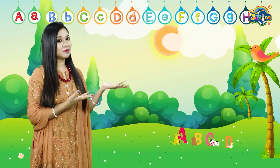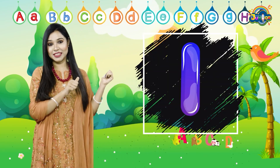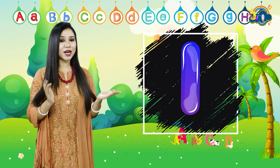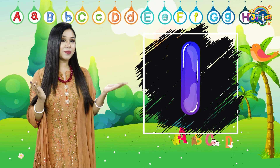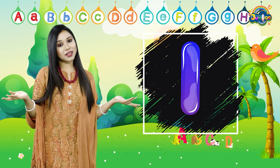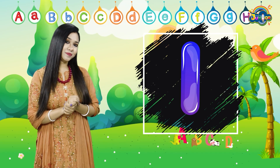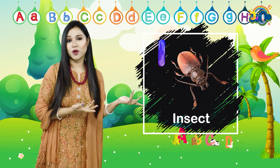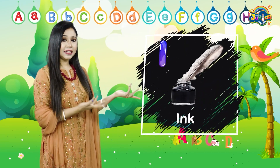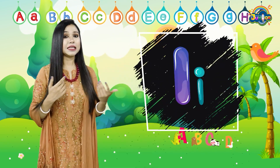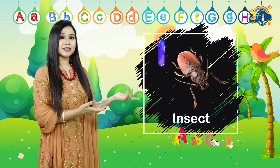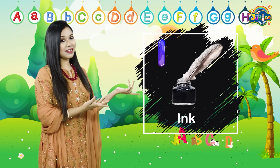The next letter is — what's the letter? It's I. Now it's time for making words. I for insect. I for ink. The sound of I is E. E, E, insect. E, E, ink.